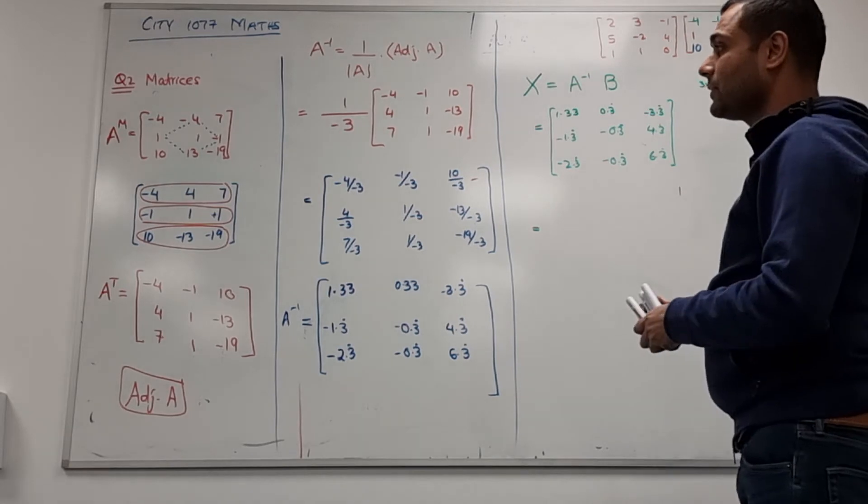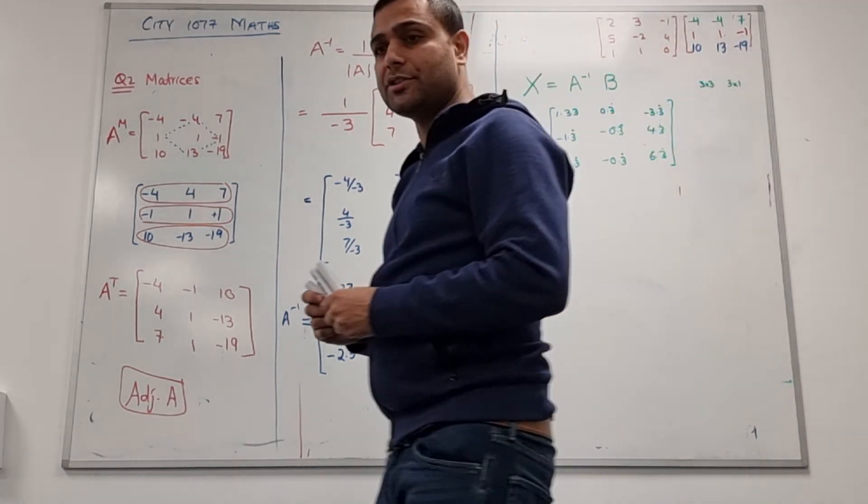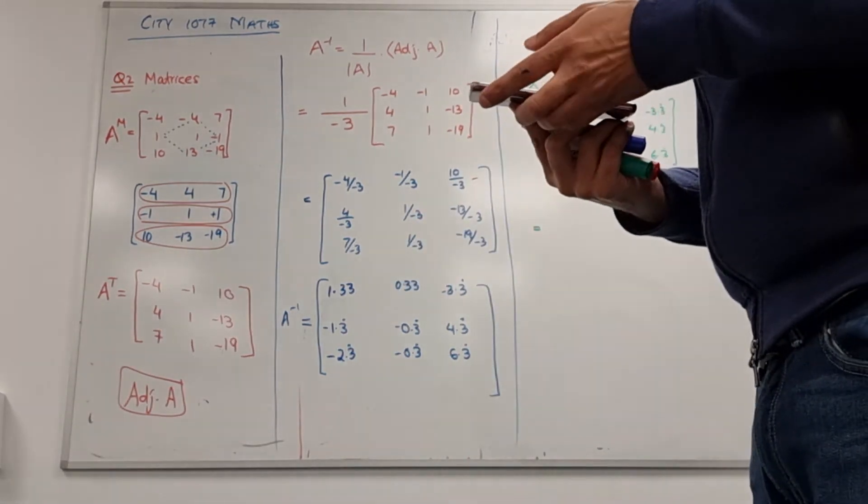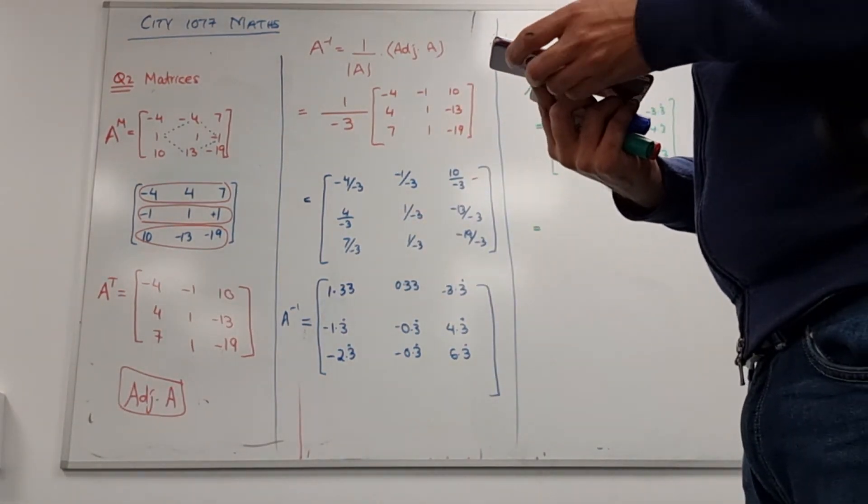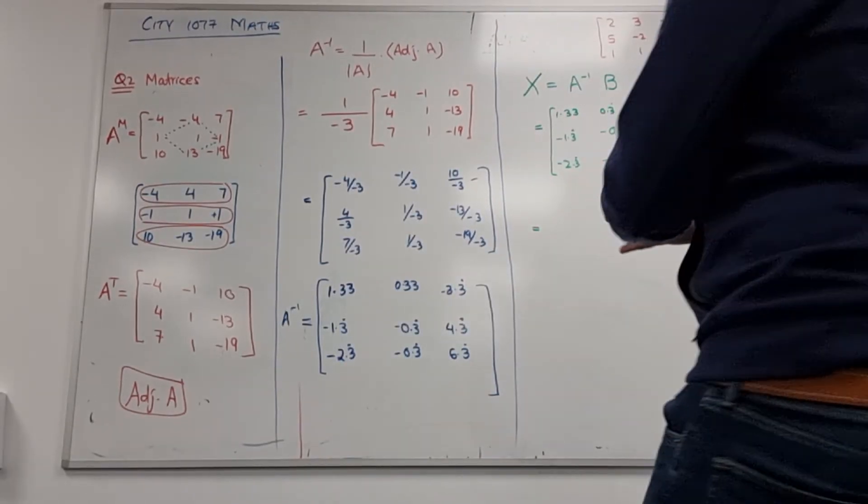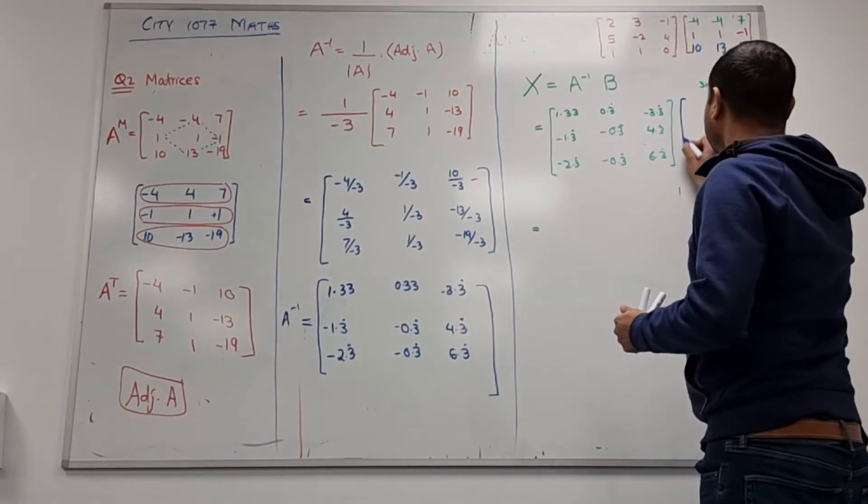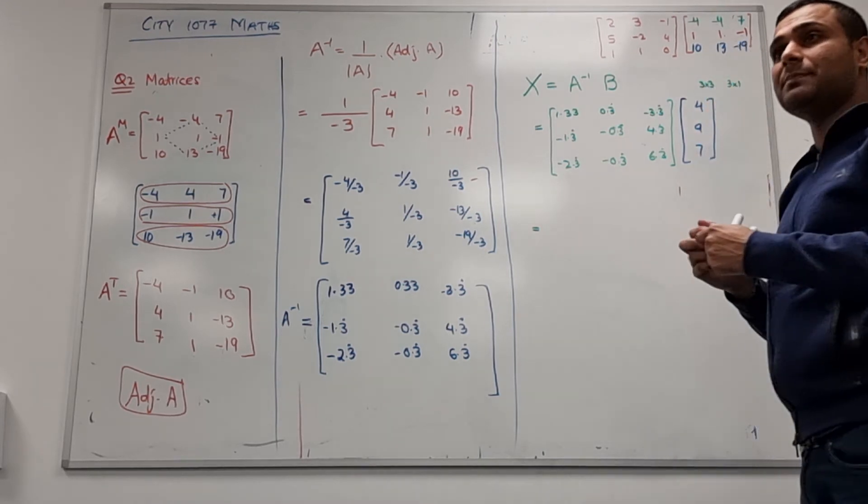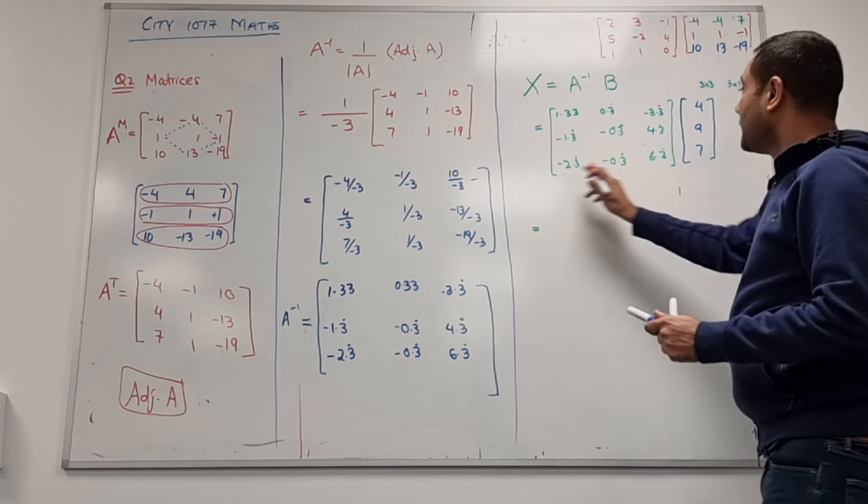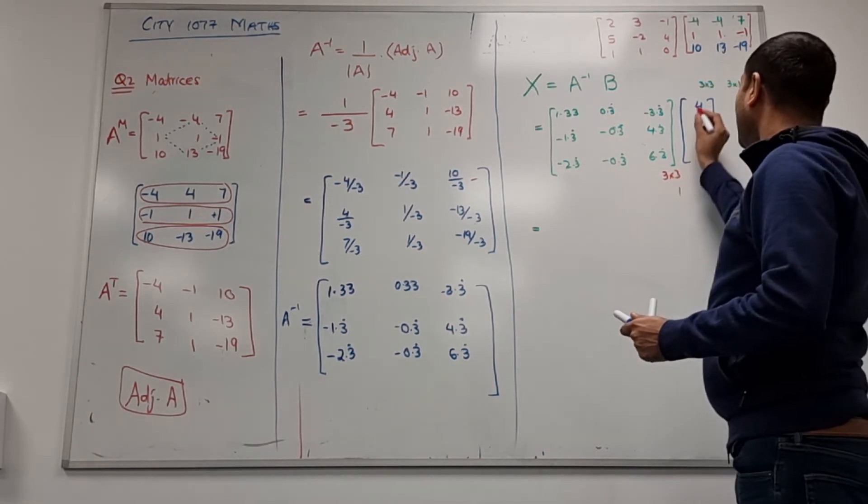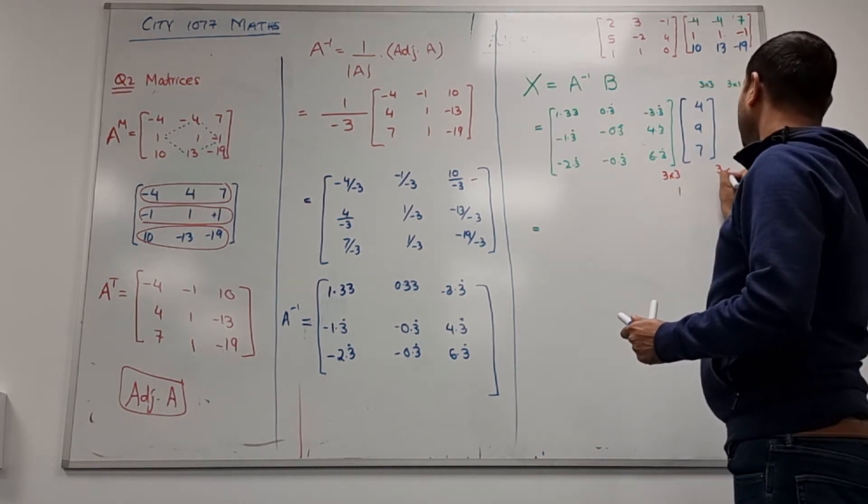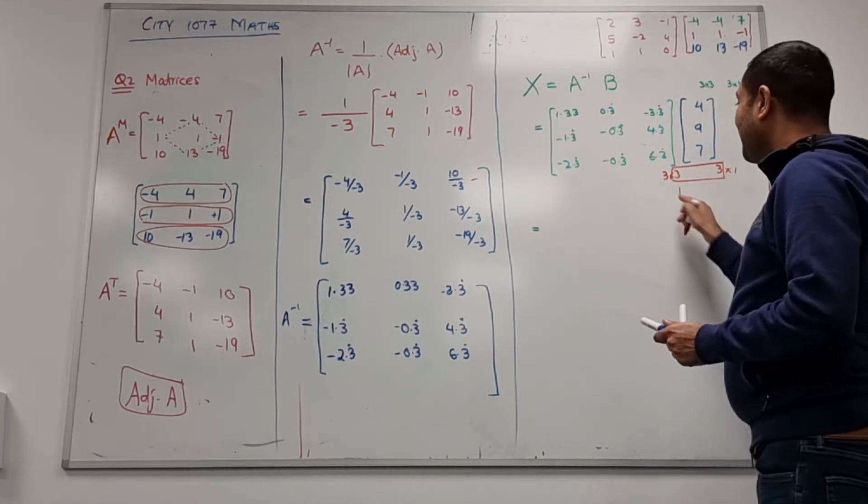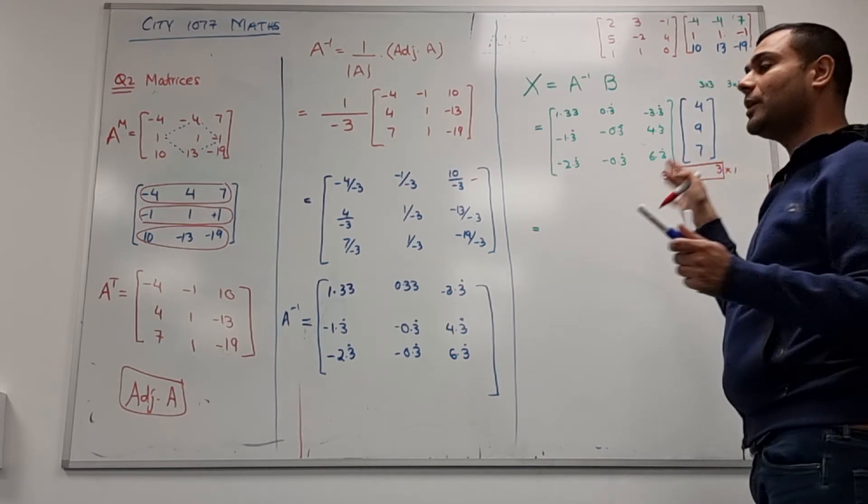Now the B is from the question, we have the value for the B from the question. Anyone got the value for the B matrix? 4, 9, 7, okay. So I'm just going to put here 4, 9, 7. Now I need to see if I can multiply them or not. The order of this matrix is 3 by 3, the order of this matrix is 3 rows and 1 column.